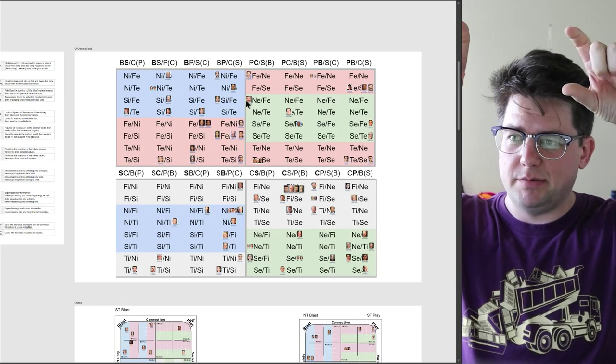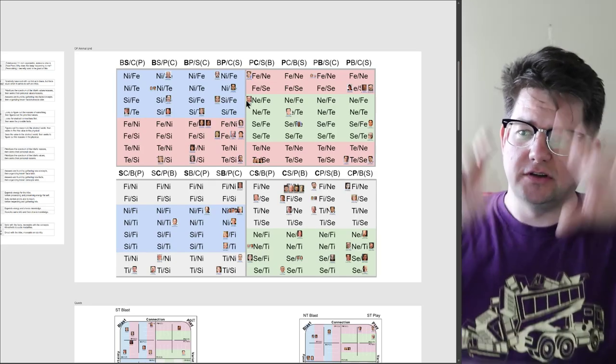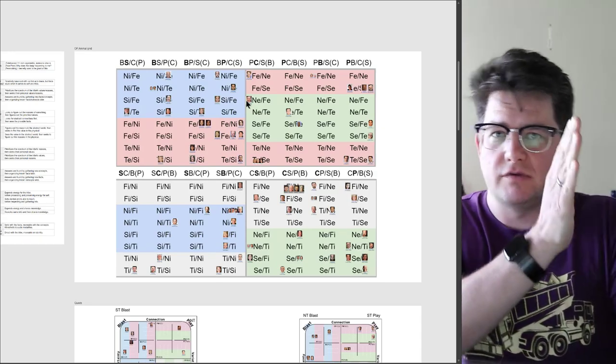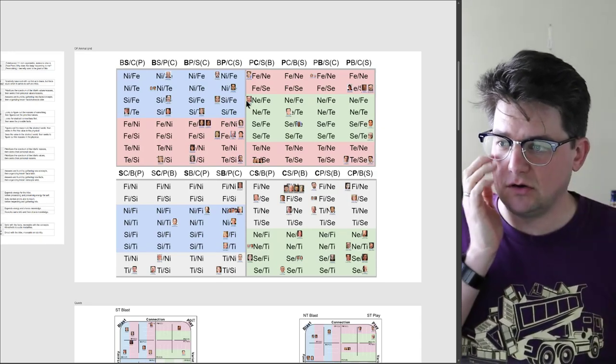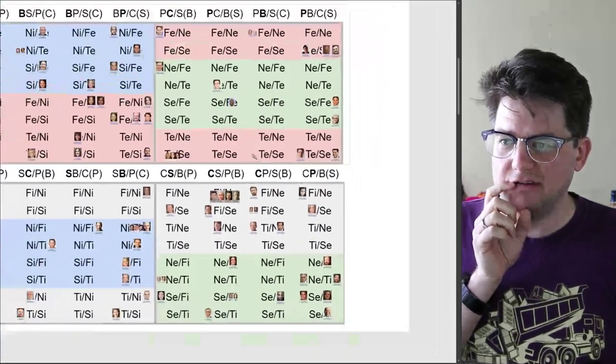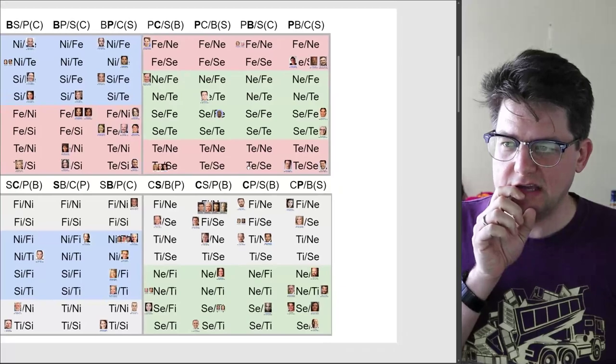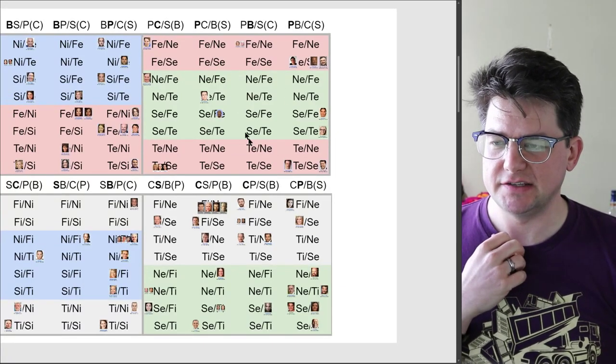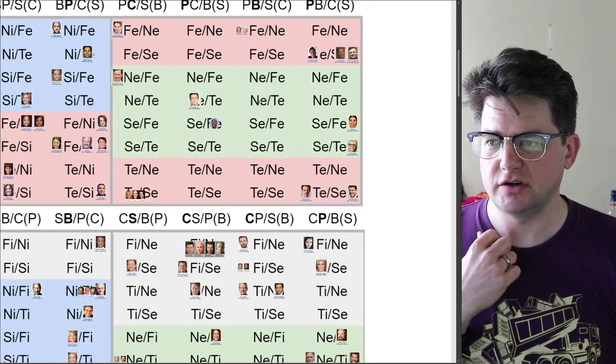How I've kind of slightly changed theirs is to take play and blast, which are the extroverts, and then sleep and consume, which are the introverts, and split them vertically. So those on top are more extroverted, those on bottom are more introverted, those on the left are more introverted, those on the right are more extroverted.